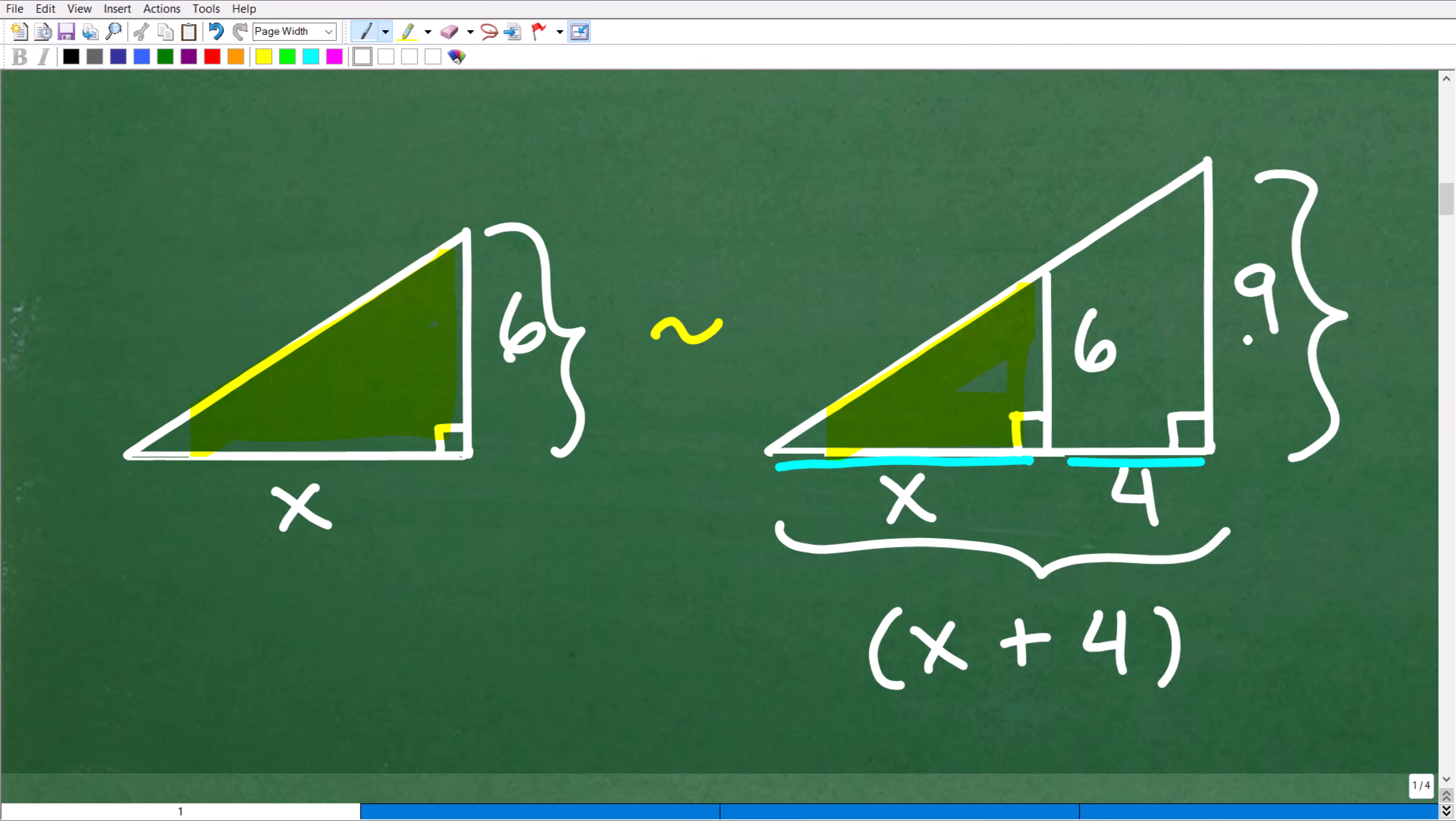The base of the smaller triangle is x, but the base of the larger triangle is not x - it's x plus 4. We have a 4 here and an x here, so this expression x plus 4 is the base of this triangle. What we can do is establish a proportion, and that's what we want to do to figure this out.